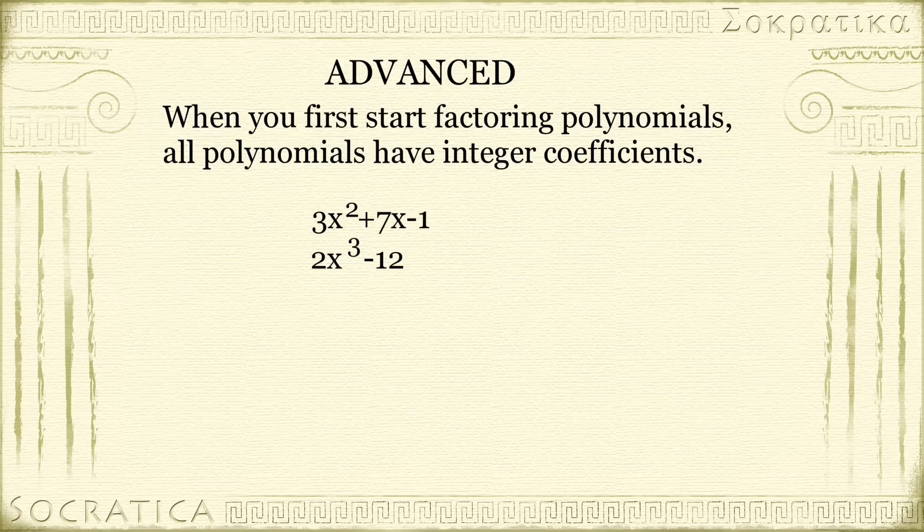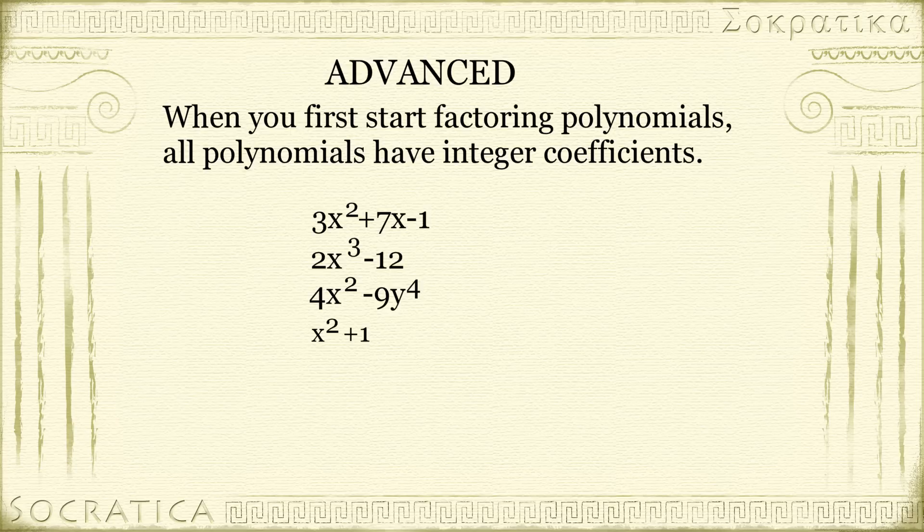2x³ - 12. Again, whole number coefficients. Integer constant. 4x² - 9y⁴. x² + 1. All the examples you tend to see have whole numbers, especially when you're working factor problems.